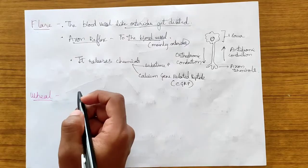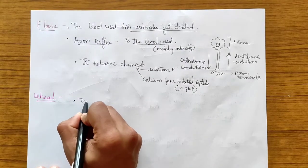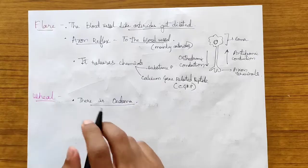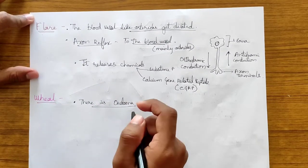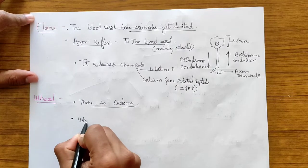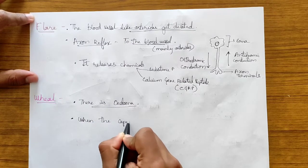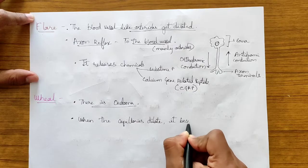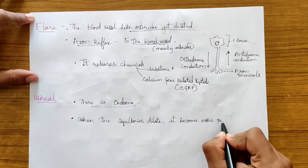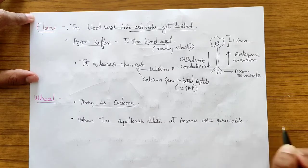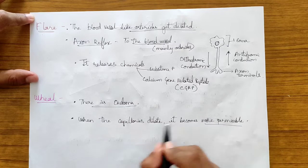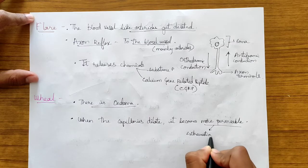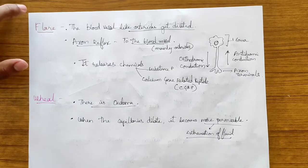Now coming to the wheal reaction of the triple response. In the wheal, there is edema. When the capillary is dilated, it becomes more permeable. When there is an increase in the permeability of the capillaries, there is extravasation of fluid from the blood vessels into the tissues, causing the edema seen in the wheal component.